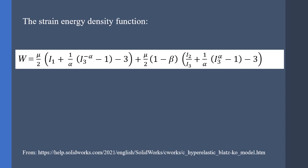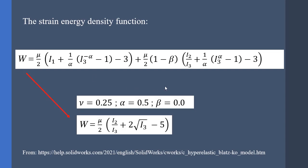Therefore, a simplified model for the Blatz-Ko material is typically used in which the beta parameter is set to 0, alpha is set to half, and nu is set to 0.25, and the simplified model is obtained according to this function.